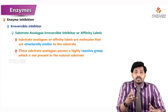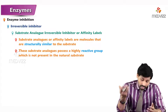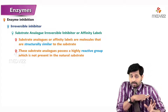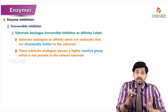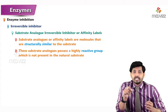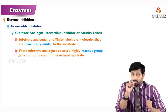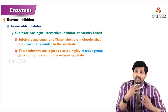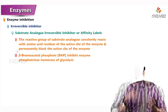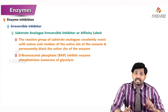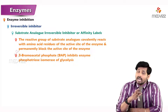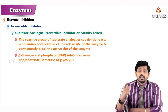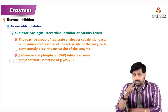Substrate analog inhibitors, also called affinity labels, are molecules structurally similar to the substrate, like in competitive inhibition. However, they possess a highly reactive group not present in the natural substrate. This reactive group covalently reacts with amino acid residues of the active site of the enzyme and permanently blocks the active site.